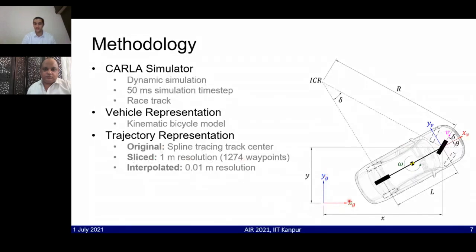Coming to the trajectory representation, the trajectory is defined with respect to the global coordinate system, which is originally a spline tracing the center of the track and which has been sliced into 1274 waypoints with approximately 1 meter resolution between each waypoint. Then as the vehicle proceeds in the near neighborhood of the vehicle's current pose, we are again interpolating the waypoints with a higher resolution of 1 centimeter online.